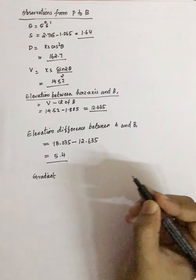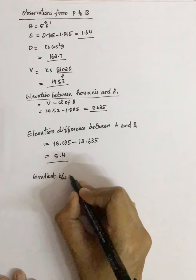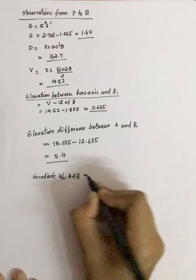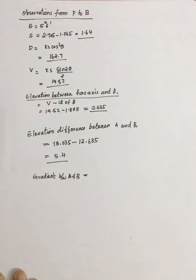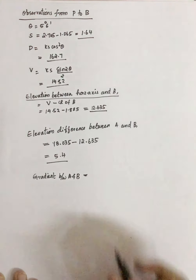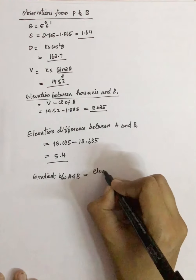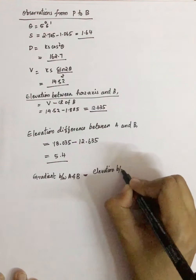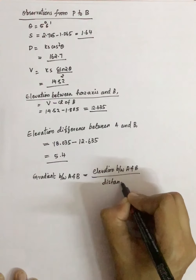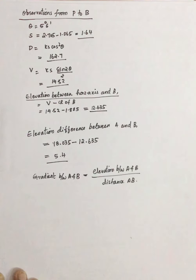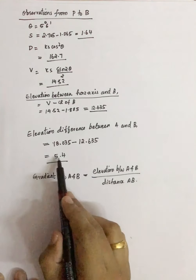The gradient between A and B is equal to the elevation between A and B divided by the distance AB. The elevation between A and B we already found.